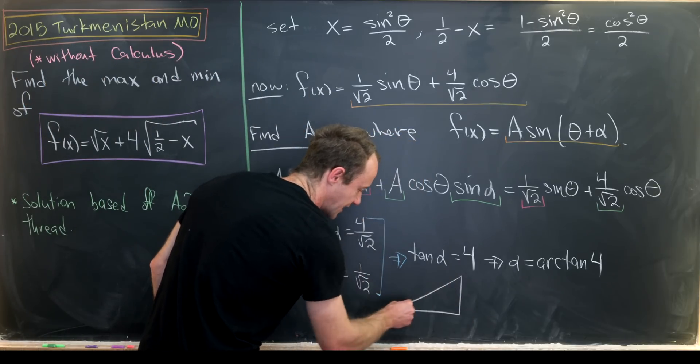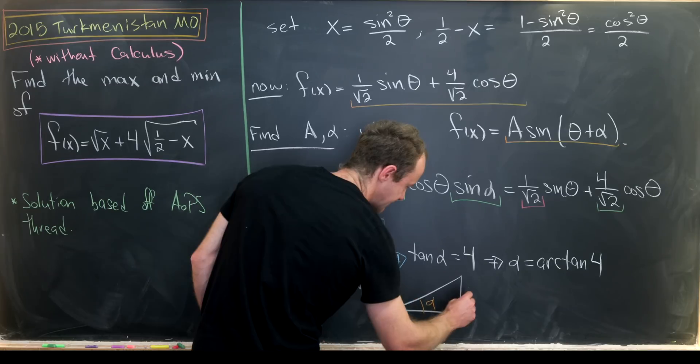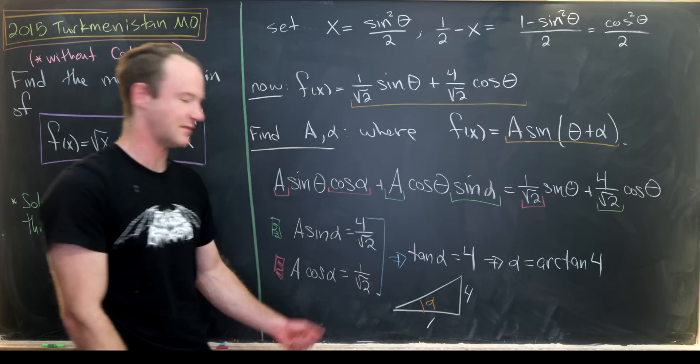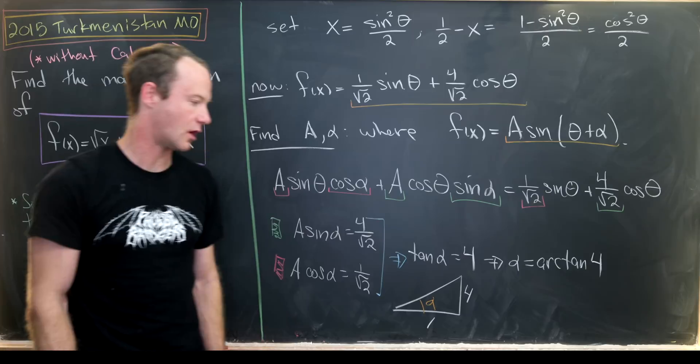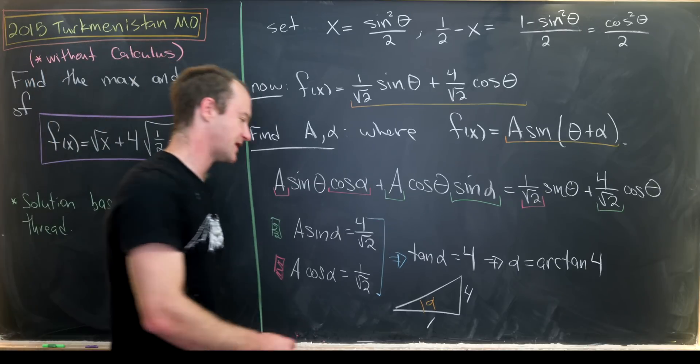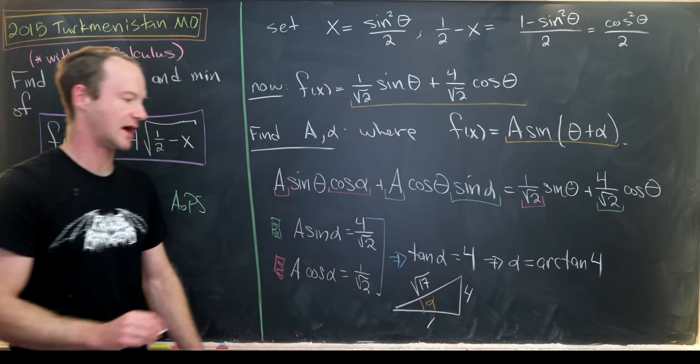So here's my right triangle. I'll say that this is angle alpha. So that means we have a measurement of four for this side and one for that side. Maybe pay no attention that it really should be longer in the other direction. This is just a mock-up. And then using the Pythagorean theorem, we get the square root of 17 for the hypotenuse.